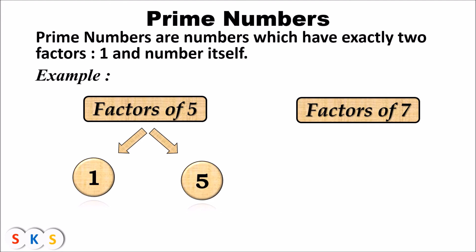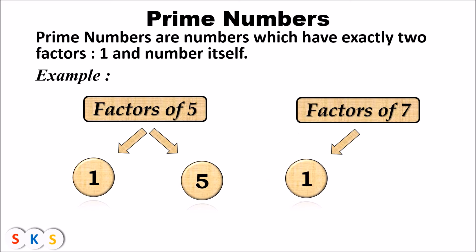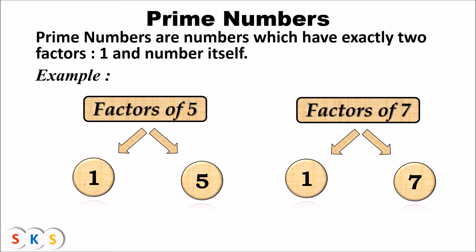Let's see one more example. Here I have taken the number seven. We will find all factors of seven. The first factor of seven is one and the second factor is seven. So the number seven has exactly two factors, therefore seven is a prime number.